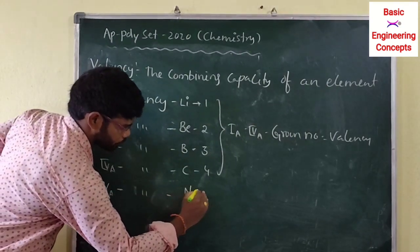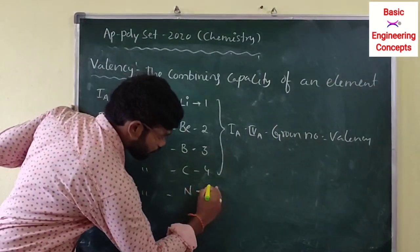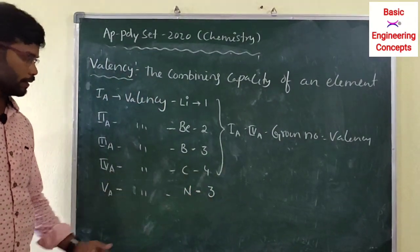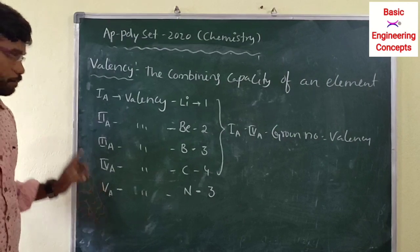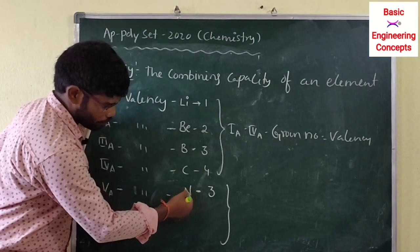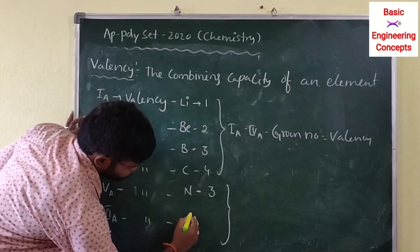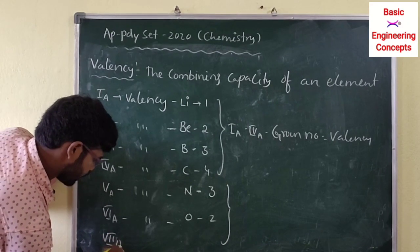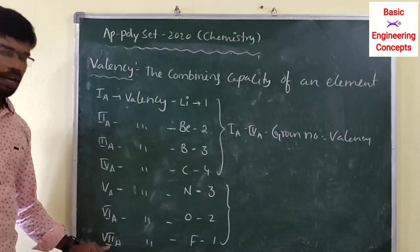From Group 5 onwards the rule changes. Nitrogen family is Group 5 but has valency three. For Group 6, oxygen family has valency two. For Group 7, the halogens like fluorine have valency one.